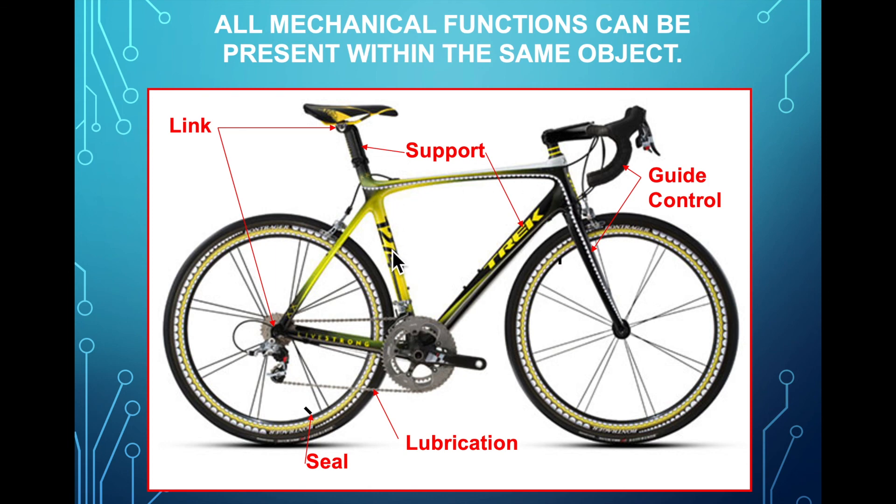Links will have nuts and bolts and screws that link all the pieces together. The tires are sealed, so the gas doesn't escape. And lubrication of the chain, so this whole system over here works properly. So all mechanical functions can be present in a given object.